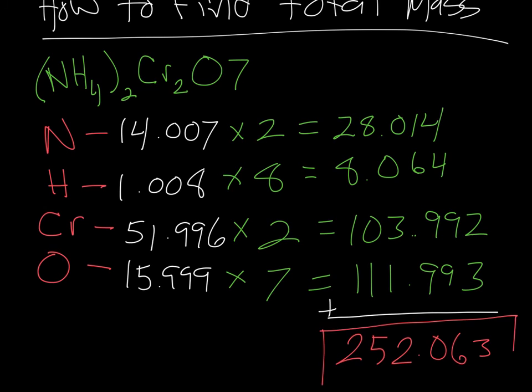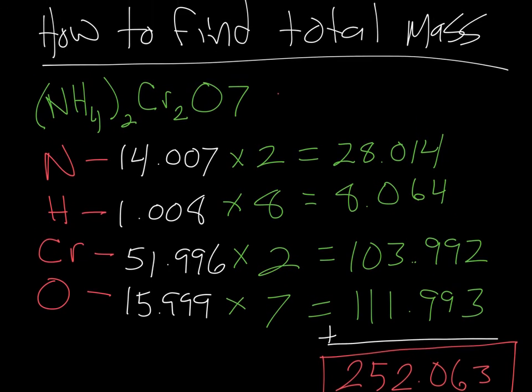So this would be the total atomic mass of ammonium dichromate. So you can see that the way that we find the total mass is you have to find the mass from the periodic table of each element, multiply it by how many of those atoms you have in your compound. Once you get those answers, you simply add them all together to get your total mass.